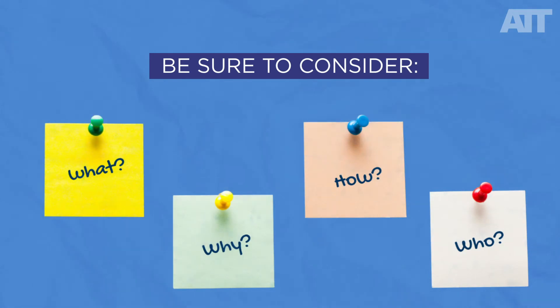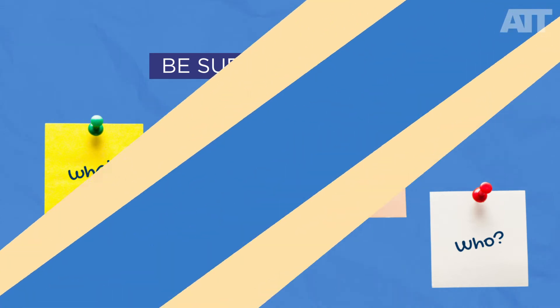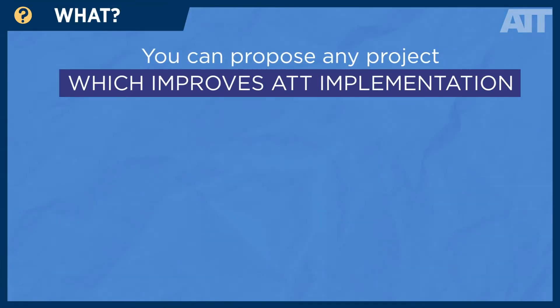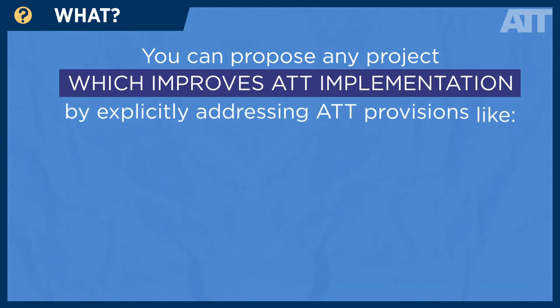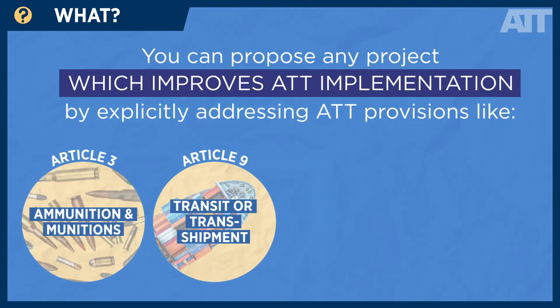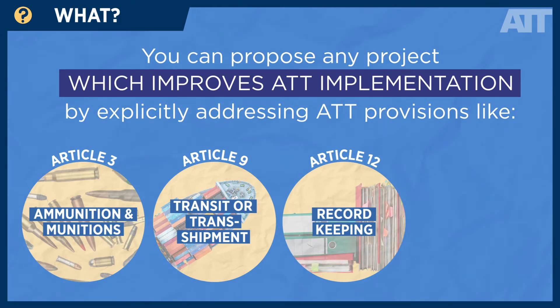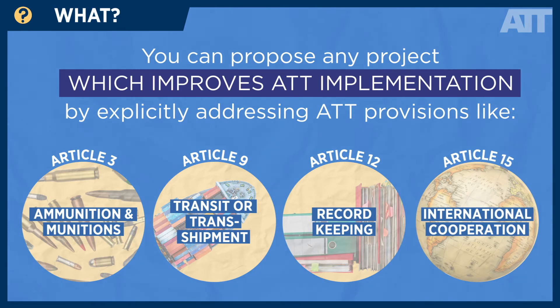It is important when designing your project that you consider the what, why, how, and who elements. First, what: you can propose any project aimed at improving ATT implementation, but the project must be linked to something states parties are required to do under the treaty.